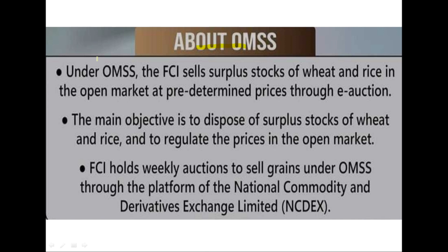Under OMSS, the FCI sells the surplus stock of wheat and rice in the open market at a predetermined price, in order to regulate the price in the open market.